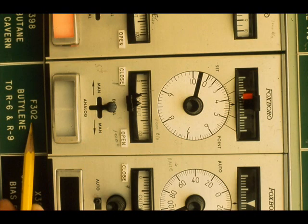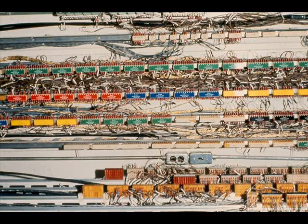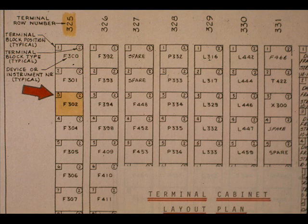Each cabinet has a terminal directory or layout drawing. This is the terminal layout for panel 4. Locate TB325-3. TB325-3 is in terminal row number 325. It is the third block from the top.